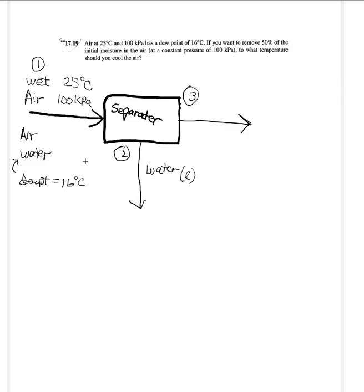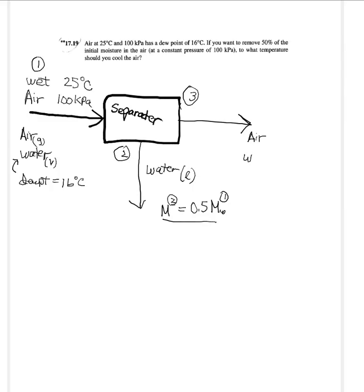In stream 2 we're only going to have water, and it's going to be liquid. Over in stream 3 it's a vapor, and of course air is a gas. The mass of stream 2 is going to equal 50% of the mass of water in stream 1. Stream 3 is going to have air and water — it's a gas stream — and stream 2 is liquid.